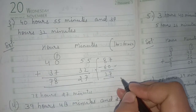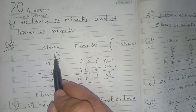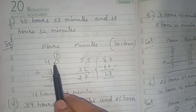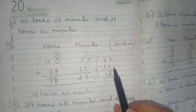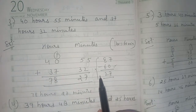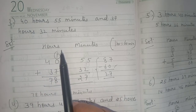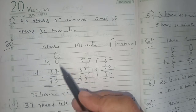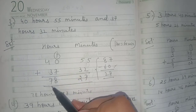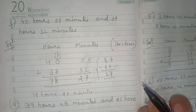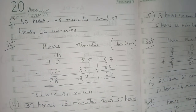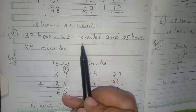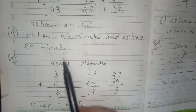The 60 minutes subtracted is carried forward to the hours column as 1 hour, because 1 hour equals 60 minutes. Now add the hours: 7 plus 1 is 8, and 4 plus 3 is 7 — that means 78 hours and 27 minutes is the answer. Now number 4: 39 hours 48 minutes and 25 hours 29 minutes.